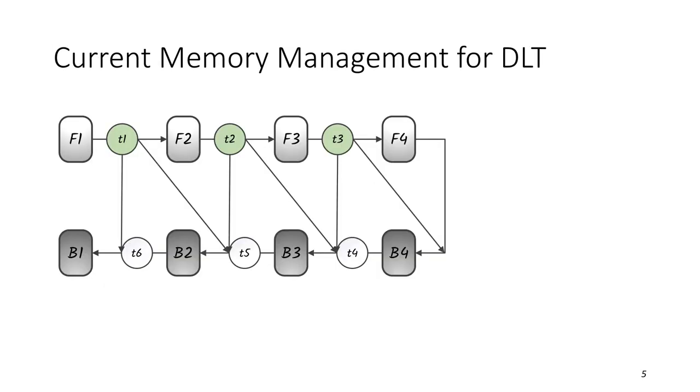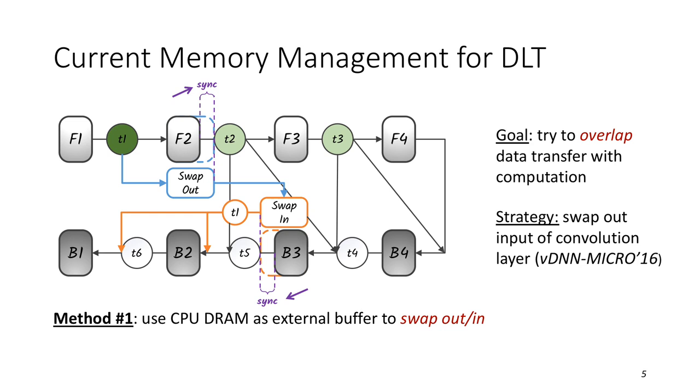Next, let's take a look at the existing memory optimization methods. Let's use a toy neural network as an example. It includes four layers where F represents forward computation and B is backward computation, in which T1 to T3 are feature maps. Assume we want to optimize the T1. The first method is to asynchronously swap out-in between GPU and CPU memory and overlap the data transfer with computation. The swap out-in needs to synchronize with the overlap layer computation shown as the purple arrow in the figure. Here, VDNN swaps out the inputs of convolution layer heuristically as the convolution layer is more time-consuming which has more time to overlap the swap.